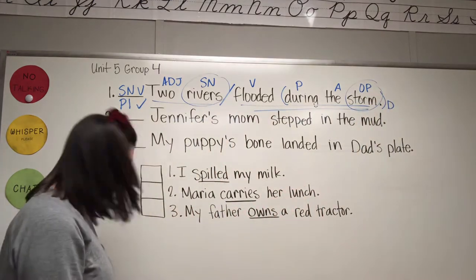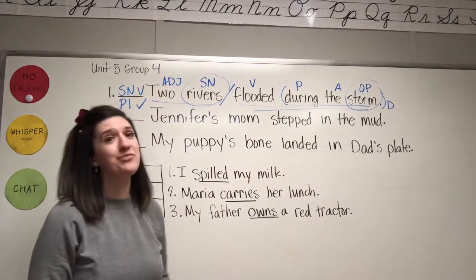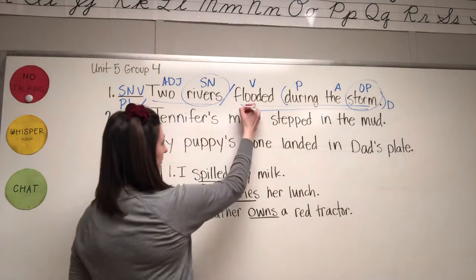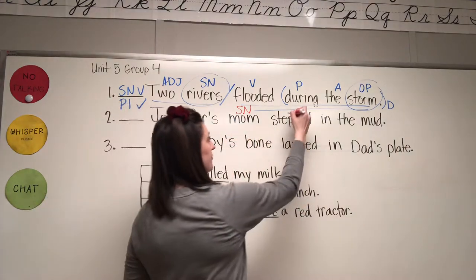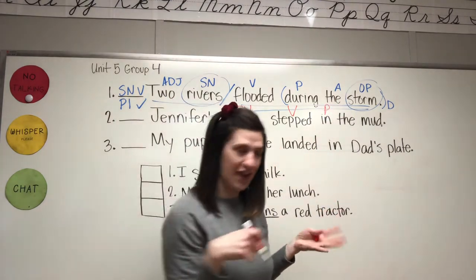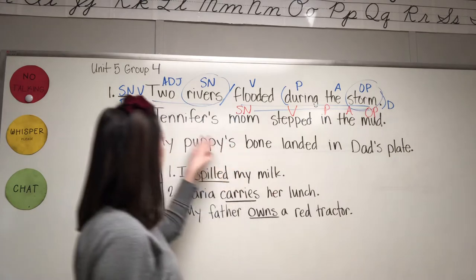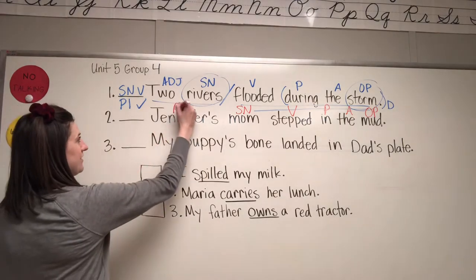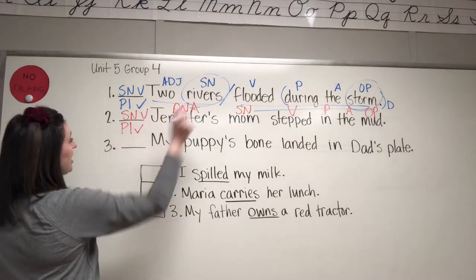All right, friends. Sentence number two: Jennifer's mom stepped in the mud. Who stepped in the mud? Mom — subject noun. What is being said about mom? Mom stepped — verb. In — preposition. In what? Mud — object of the preposition. The — article, adjective. Whose mom? Jennifer's — possessive noun, adjective. Subject, noun, verb — Pattern One. Check! Woohoo!